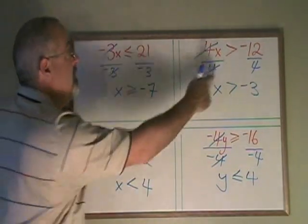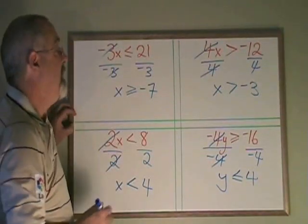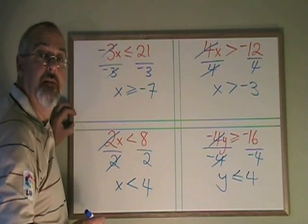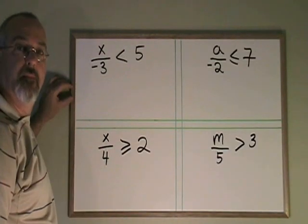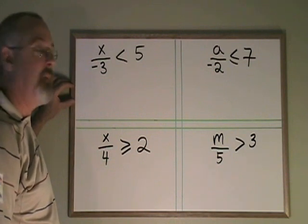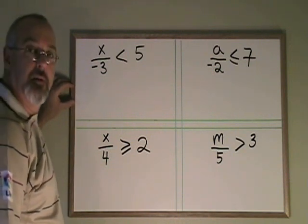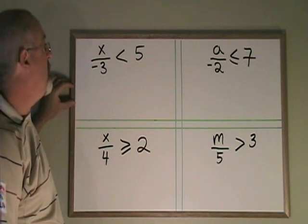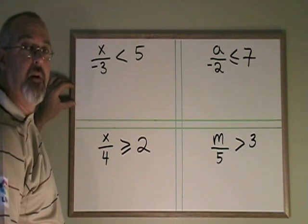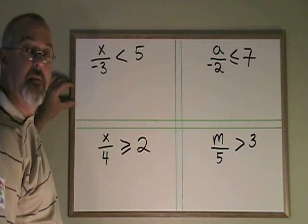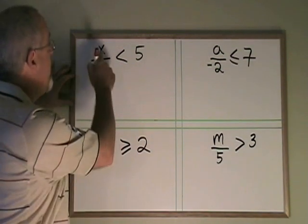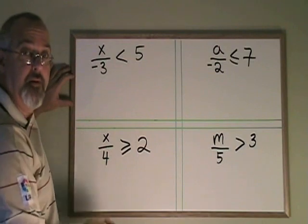In the cases where we were dividing both sides by a positive number, the symbol stayed facing the direction it was originally facing. There is another circumstance where we have to turn the symbol backwards. In the last examples, we looked at situations where our variable was being multiplied by a negative number, and we found out that whenever you divide both sides of an inequality by a negative number, you have to turn the symbol backwards.